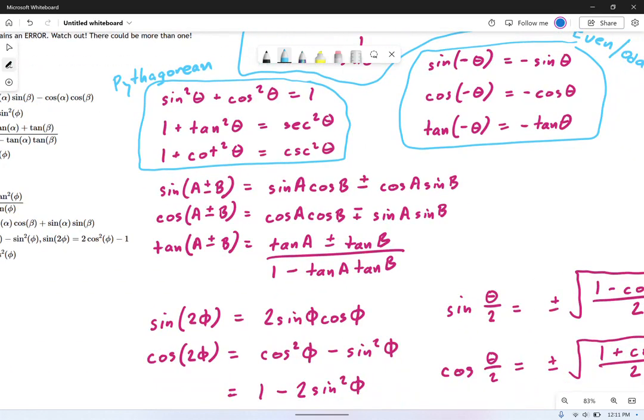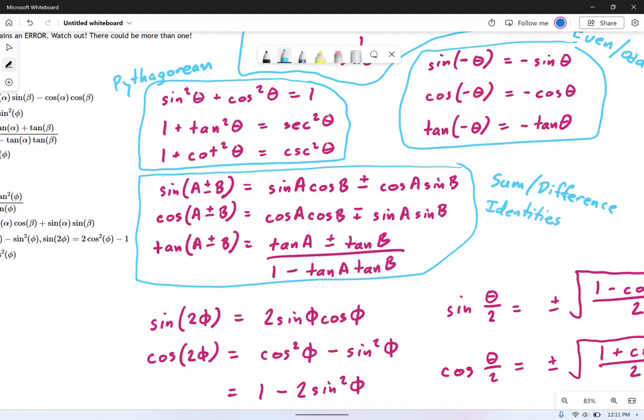Moving on, you have the sum-difference identities, and I think the first two of those are the most important, the sine and the cosine identities. You really need to memorize those. You can figure out tangents if you need it, so you don't need to memorize tangent, but sine and cosine, those are pretty essential.